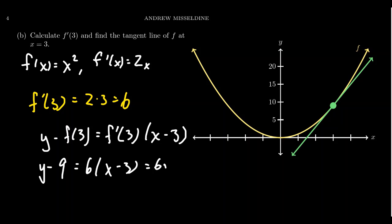x minus three right here. So distribute the six. We get 6x minus 18. We're then going to proceed to add nine to both sides of the equation. We end up with y equals 6x minus nine.